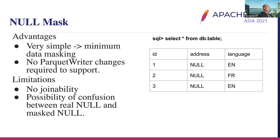Here is an example for the null mask — the most basic one. The advantage is that it's very simple with minimal data masking. When you have no access to some columns, you get nulls. No Parquet writer changes are needed to support it; it's just the reader returning null when it sees you have no access. The limitation is no joinability because the data all becomes null. There is also the possibility of confusion between a real null and this masked null.